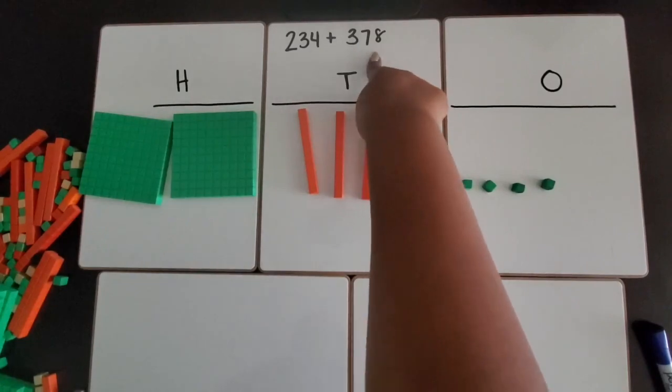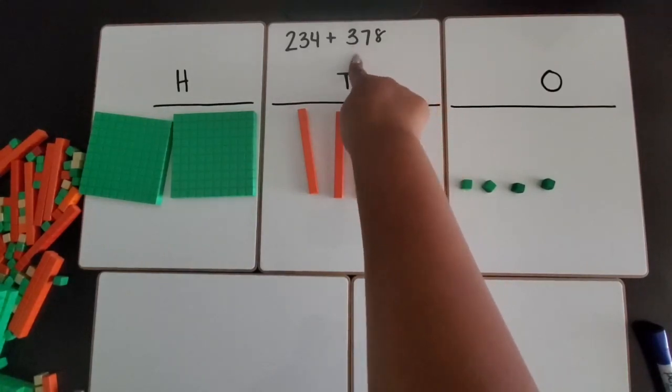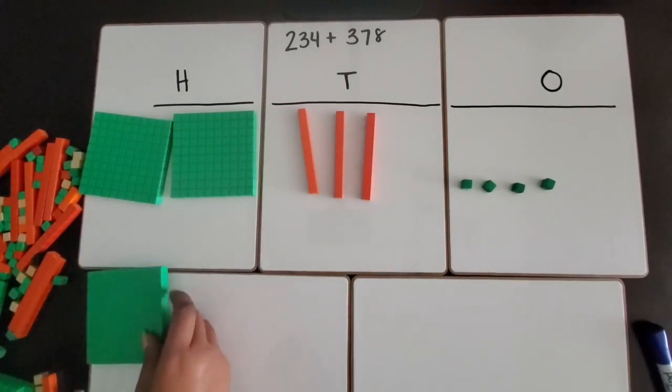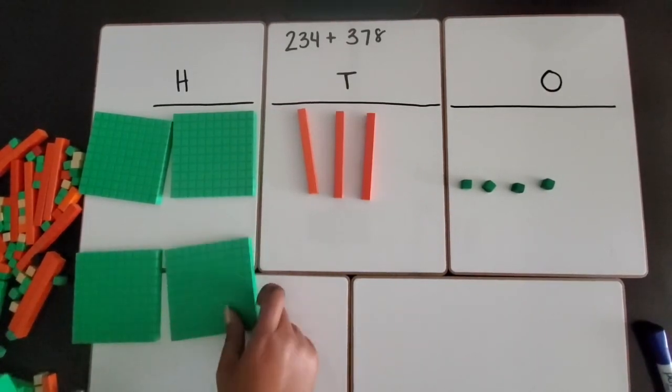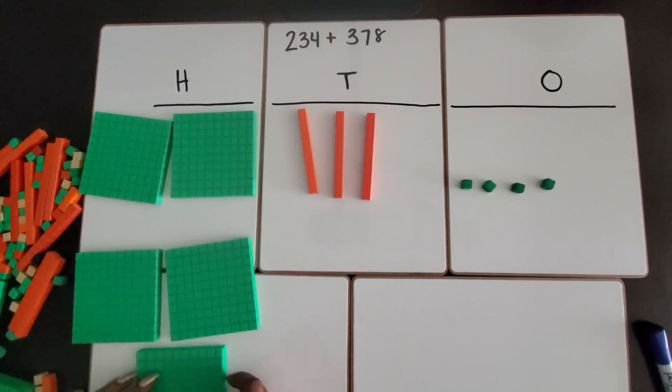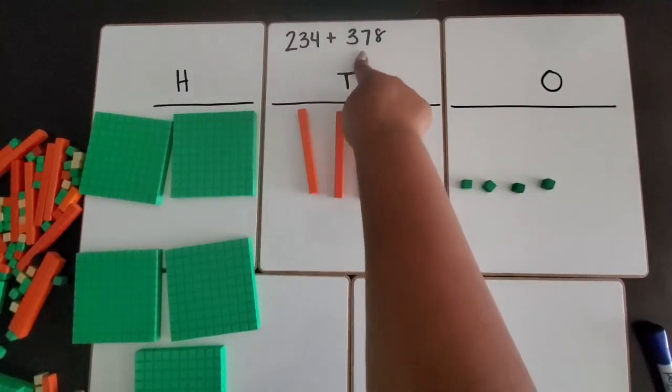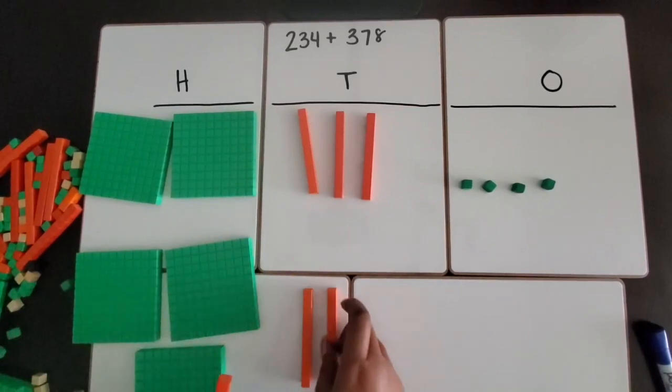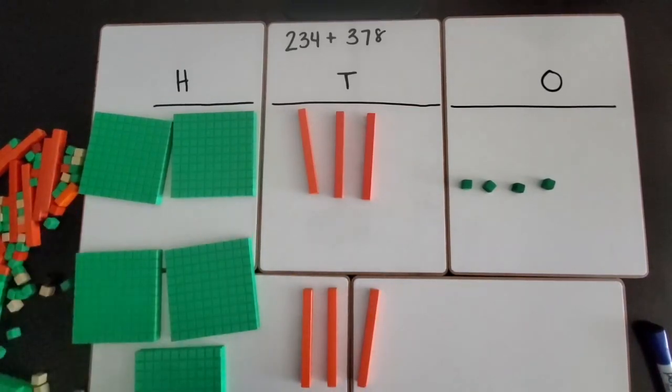Now we are going to build the second number, 378. 378 has three hundreds, so we are going to use three hundred flats. 378 has seven tens, so we are going to grab seven of these ten rods.